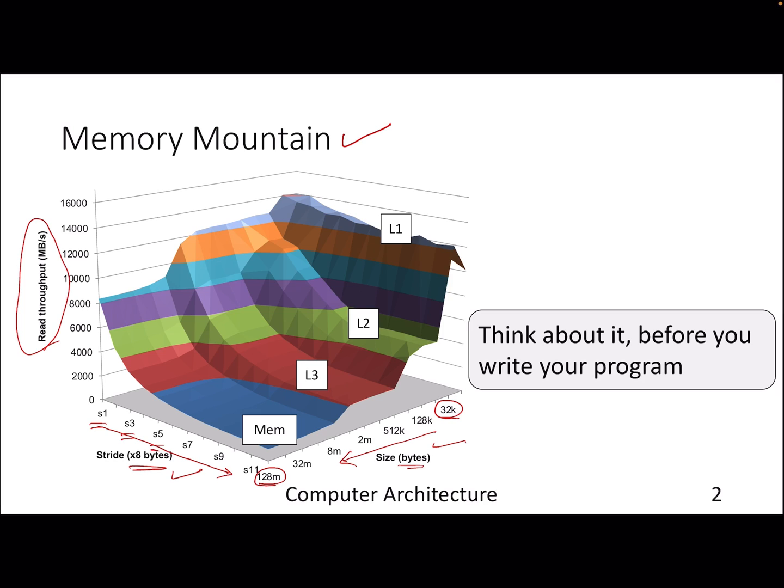If you look at a particular point, let's say this point, the bandwidth is really high because our application is getting hits from L1. Our working set is fitting into L1, so we're not going into the memory.